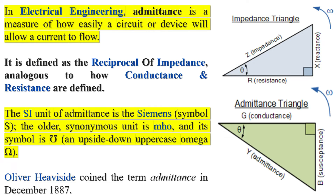In electrical engineering, admittance is a measure of how easily a circuit or device will allow a current to flow. It is defined as the reciprocal of impedance, analogous to how conductance and resistance are defined. The SI unit of admittance is the Siemens, symbol S. The older synonymous unit is Mho, and its symbol is an upside-down uppercase Omega. Oliver Heaviside coined the term admittance in December 1887.